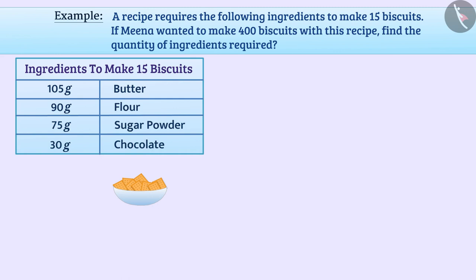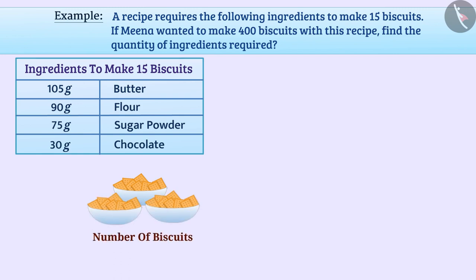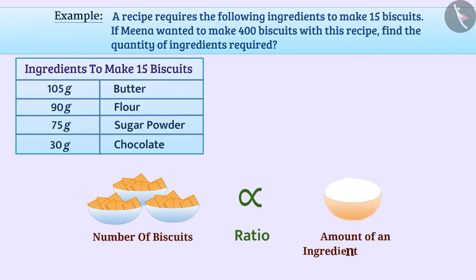Here we are given the quantity of ingredients required to make 15 biscuits. The ratio in which the number of biscuits increases is the same as the ratio in which the amount of an ingredient required increases. Therefore, we can say that there is a direct proportion between the number of biscuits and the amount of ingredients.